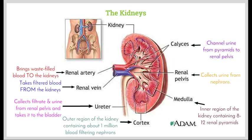And lastly, the renal vein, which takes the filtered blood — which no longer contains any nitrogenous wastes — from the kidneys back to the rest of the body.